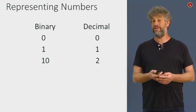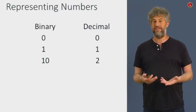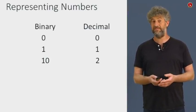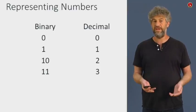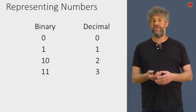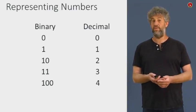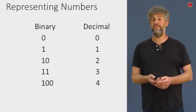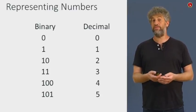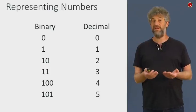Two is already the first problem because we don't have another possibility, so we have to use two bits: one, zero. Three is one, one. For the next one, we already need another bit: one, zero, zero - that's four. And in general, it seems we can represent any numbers that we want with some sequence of bits.